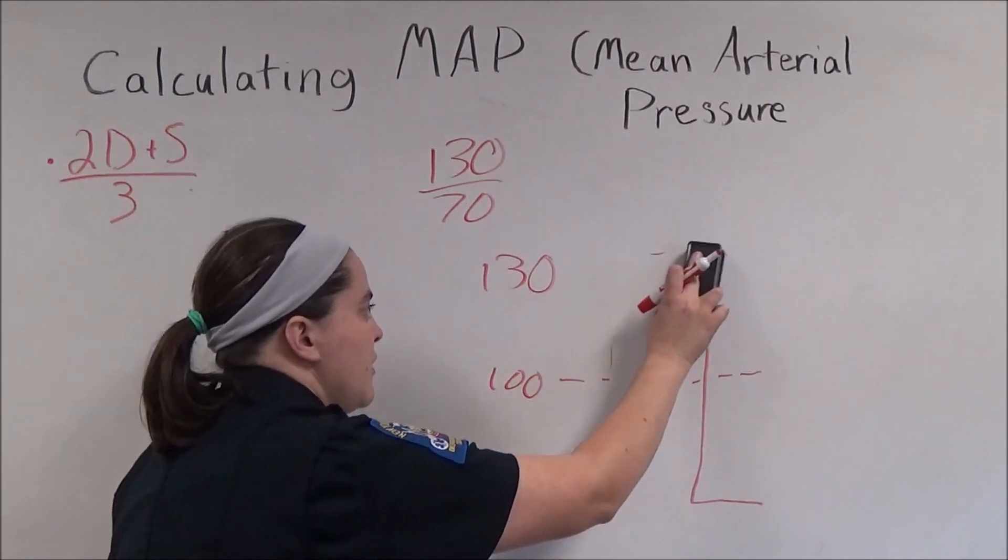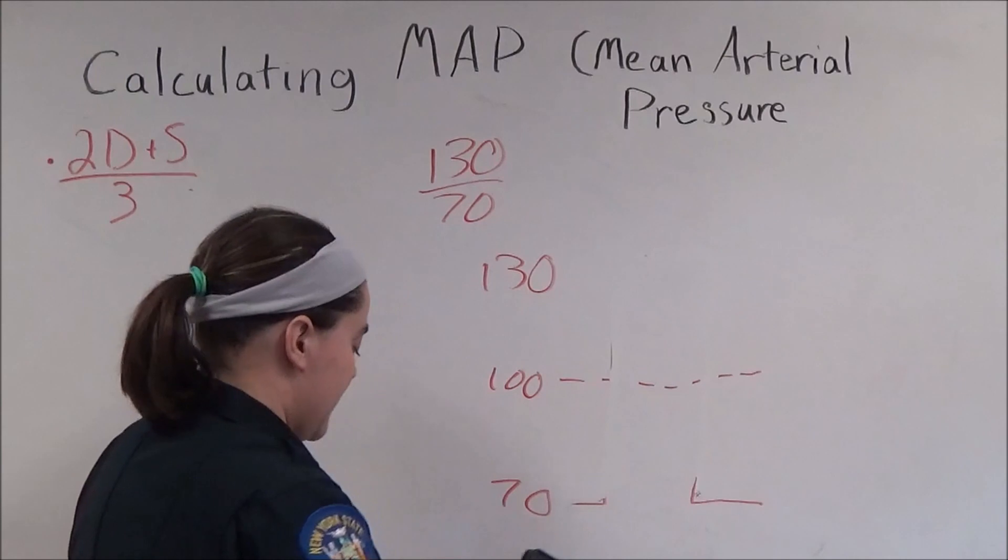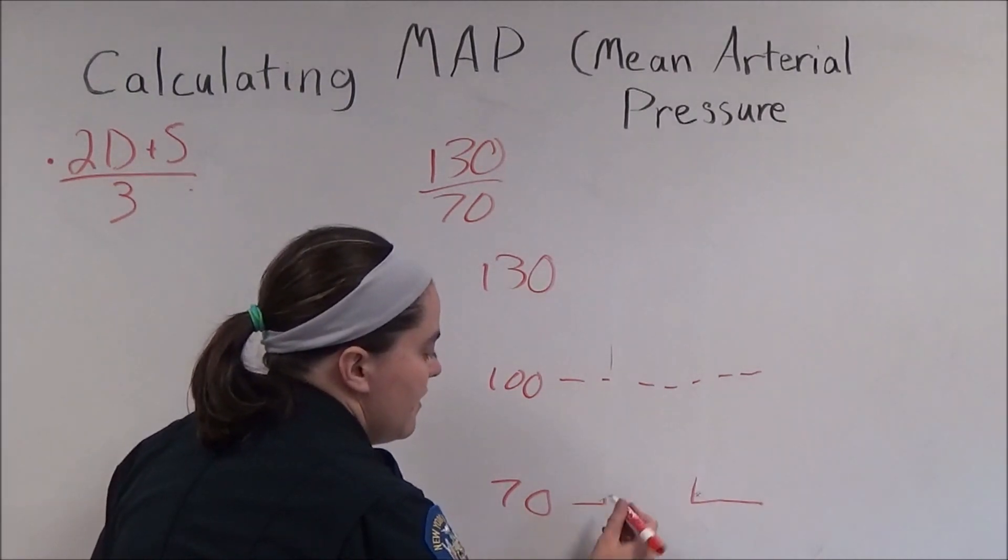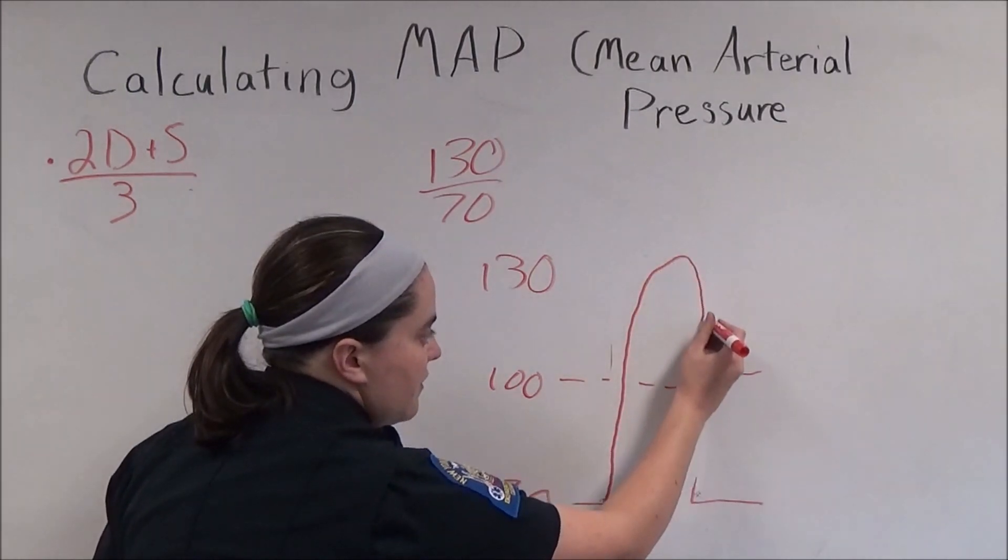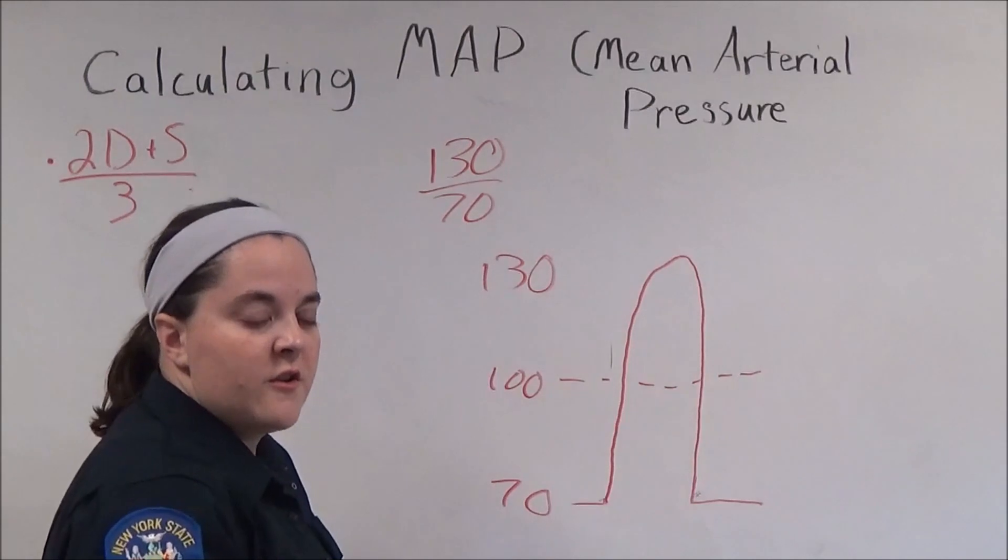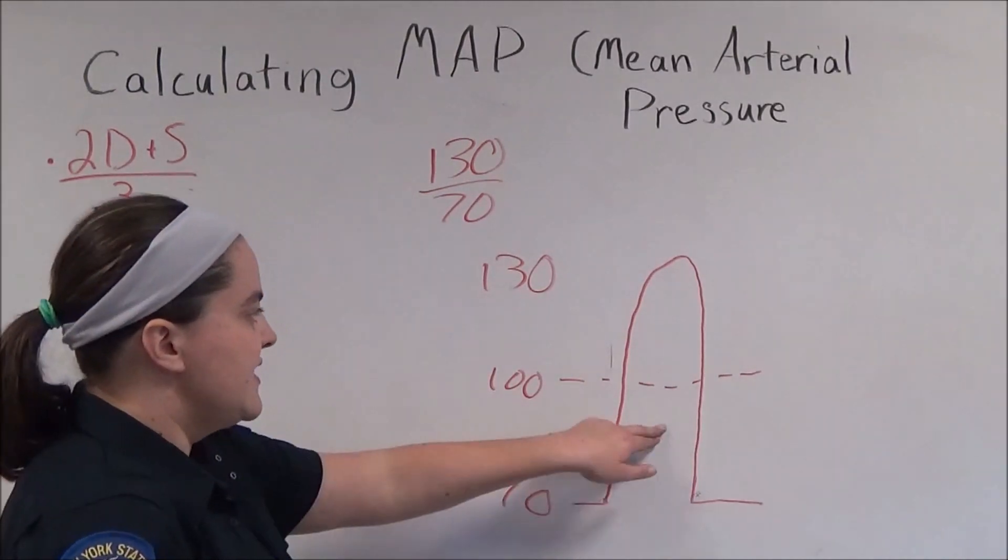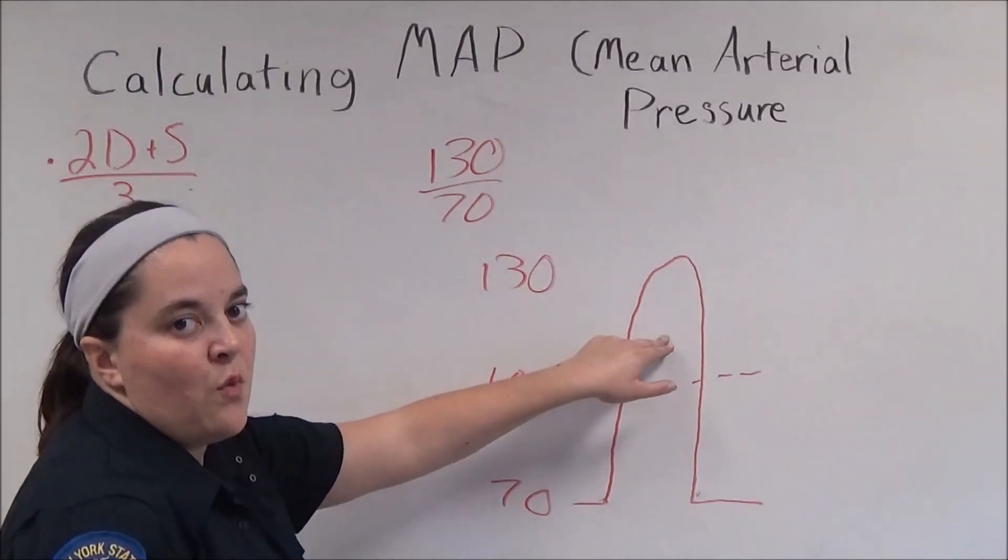However, blood pressure cannot be represented as a rectangle. It's represented as a curve. And when it's represented as a curve, as you can see here, there's more fluid volume between 70 and 100 than there is between 100 and 130.